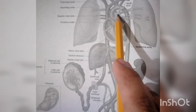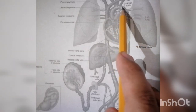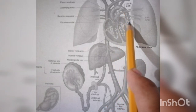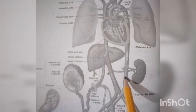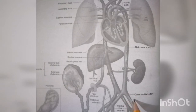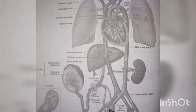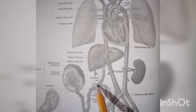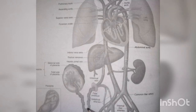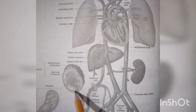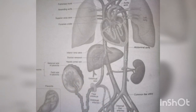The blood is shunted through the ductus arteriosus into the aorta — specifically the descending aorta. The descending aorta branches off to the iliac artery, which connects to the umbilical artery, carrying deoxygenated blood back to the mother. The mother's circulation then removes the waste products and replenishes the oxygen.